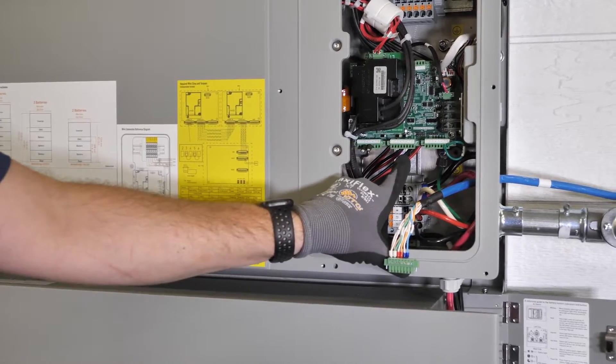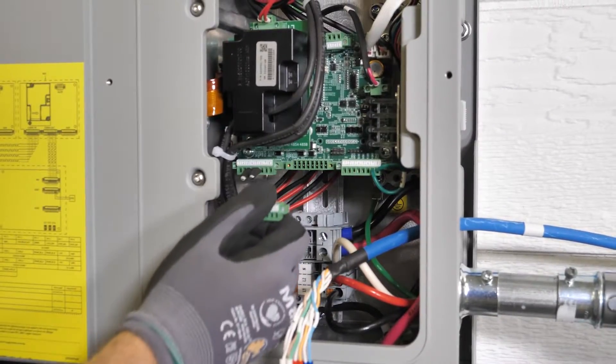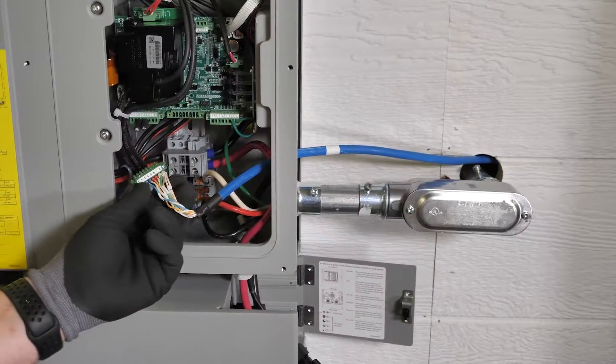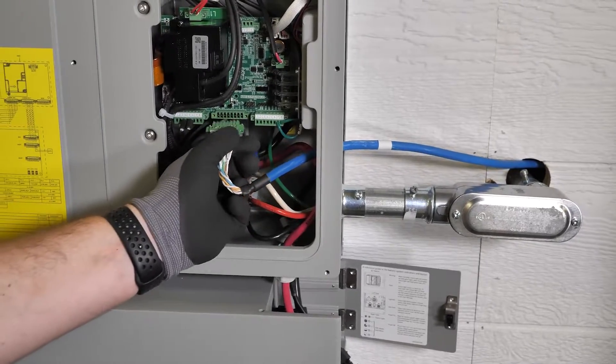Remove the empty eight pin connector and set aside. Connect the smart box communication to the inverter comm support.